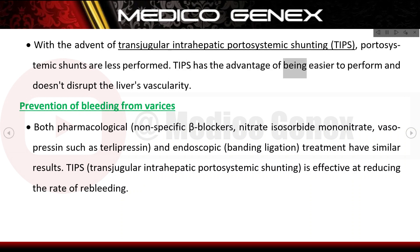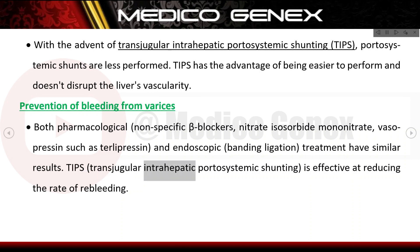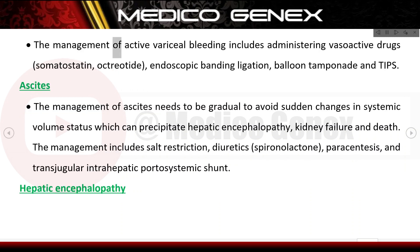TIPS has the advantage of being easier to perform and does not disrupt the liver's vascularity. Prevention of bleeding from varices involves both pharmacological treatments — non-specific beta blockers, nitrate isosorbide mononitrate, vasopressin agents such as terlipressin — and endoscopic banding ligation, with similar results. TIPS is effective at reducing the rate of re-bleeding. Management of active variceal bleeding includes vasoactive drugs such as somatostatin and octreotide, endoscopic banding ligation, balloon tamponade, and TIPS.